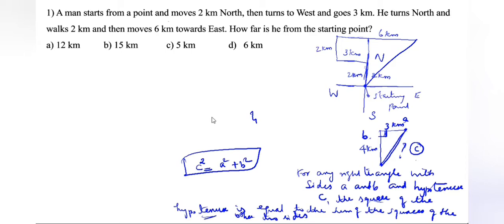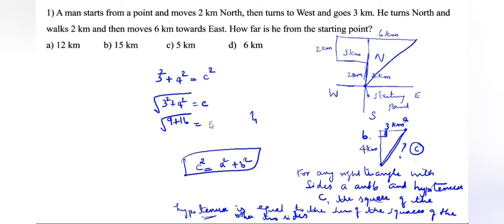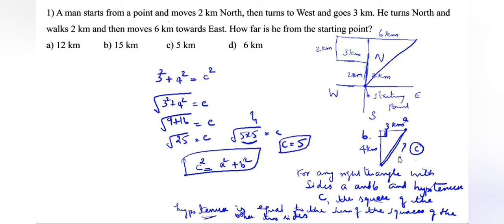What is A in this case? Three. So A is three squared plus B is four squared equals C squared. Three squared plus four squared equal to C — take the root. Three threes are nine, four fours are sixteen. Root of 25 equals C. Root of 5 times 5 equals C, so C equals 5. This is 5 kilometers — C is the answer.